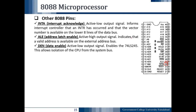The next pin is pin number 26, the Data Enable pin DEN bar. It is an active low output signal — indicated by the bar on the pin. It enables the 74LS245 and allows isolation of the CPU from the system bus. The 74LS245 will be discussed when we cover the system bus and the local bus.